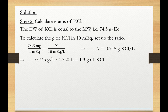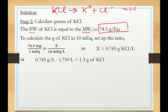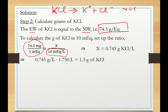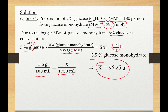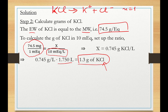For potassium chloride, a monovalent salt, KCl dissociates into K⁺ and Cl⁻, so n = 1 and the equivalent weight equals the molecular weight: 74.5 g. Therefore, 74.5 mg KCl = 1 mEq KCl. At 10 mEq/L, that is 0.745 g/L. For 1750 ml, we need 1.3 g of KCl. To prepare this solution, dissolve 1.3 g of KCl and 96.25 g of glucose monohydrate, then QS to 1750 ml with water.